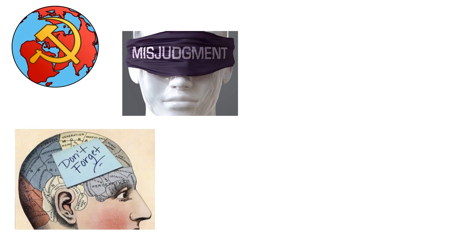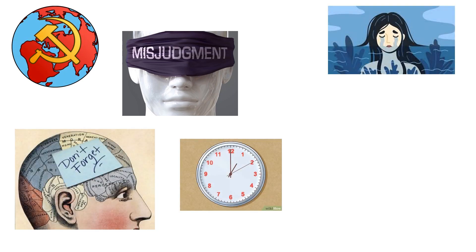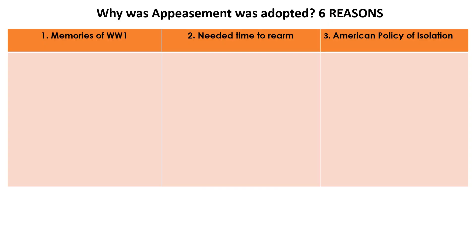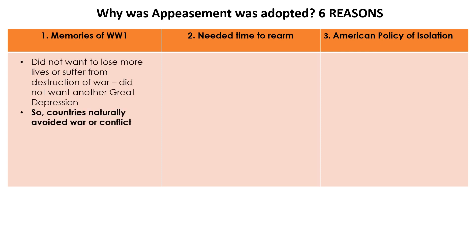So, appeasement — what were the reasons for appeasement? I hope you remember what all these symbols meant, because we're going to do a very quick recap of the reasons for appeasement. Altogether there are six reasons. Why was appeasement adopted? The first three reasons: the first is definitely memories of World War I. Countries did not want to go through what they had experienced during World War I — of course there was a lot of suffering.